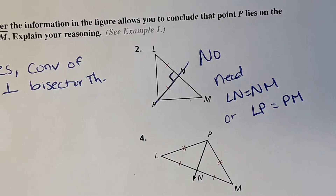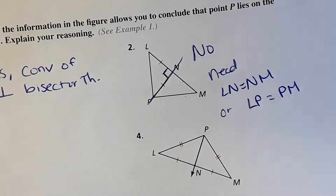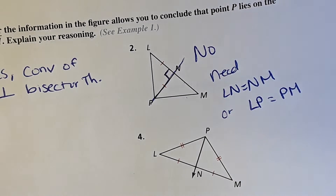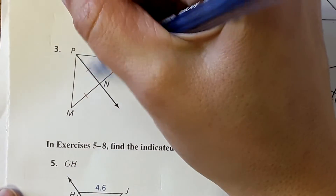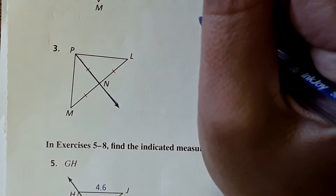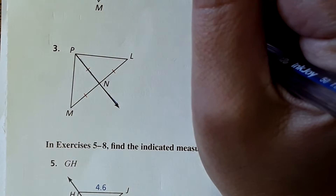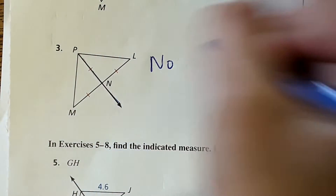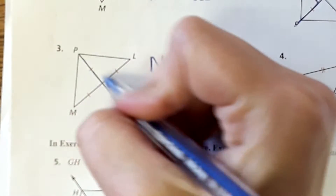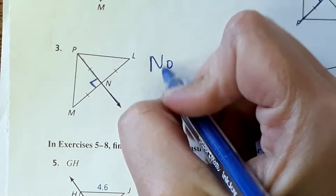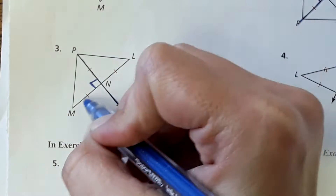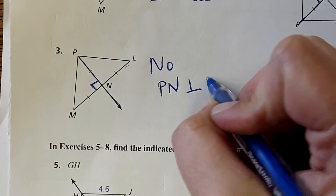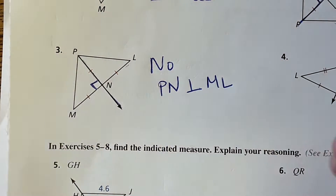Number three — can we prove that this is a perpendicular bisector? Nope. We need to know that this is perpendicular. So we'd have to know that PN is perpendicular to ML, or NL, something like that.